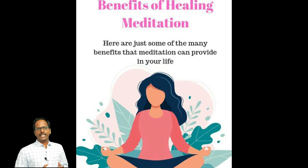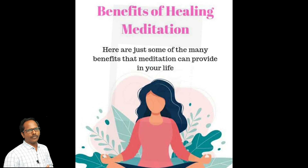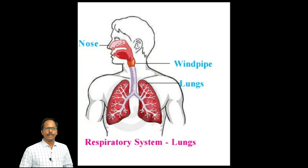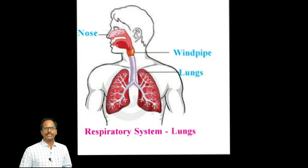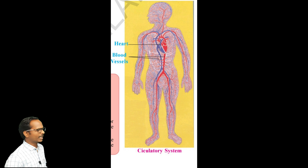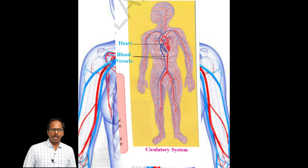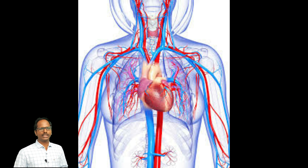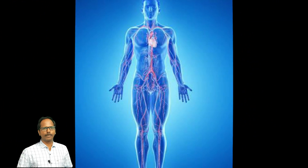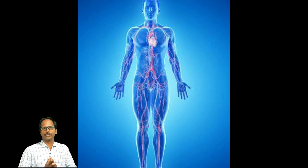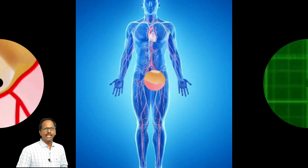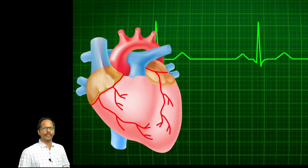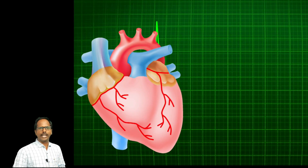Okay children. This is detailed information about the respiratory system in our human body. Now it is time to know about the circulatory system. Children, look at the picture on the screen. This picture shows the circulatory system. Heart supplies blood to all parts of the body. Blood transports oxygen and a variety of materials obtained from the food we eat to each and every part of the body.